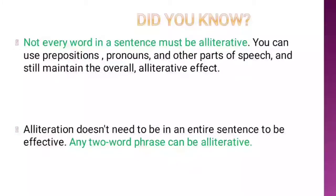In English there are 44 speech sounds: 24 consonants and 20 vowels. In alliteration, you always repeat the consonant sounds. Every sentence does not need to produce alliteration. We can use any parts of speech to create an overall alliterative effect. It is not necessary that the whole sentence demonstrates alliteration; the second sentence can also give an alliterative effect.